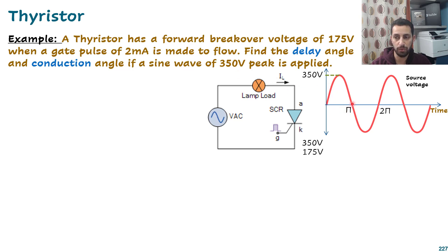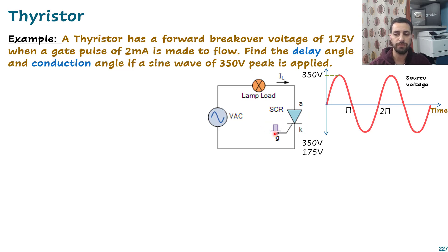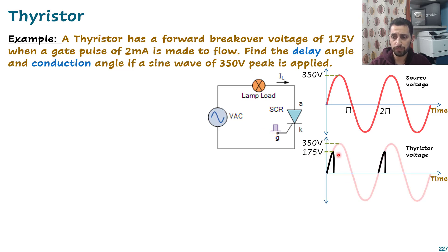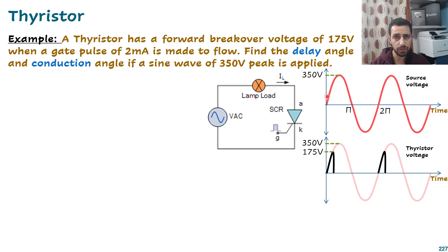The sinusoidal voltage increases from zero up to a peak and back down. The thyristor has a forward voltage of 175 V — meaning at that point the thyristor is triggered on. While the thyristor is off, there is no current through the load and no voltage drop across it, so all the source voltage appears across the thyristor. The voltage across the thyristor starts from zero and rises — 10, 20, 30, 40, 50 — until it reaches 175 V.